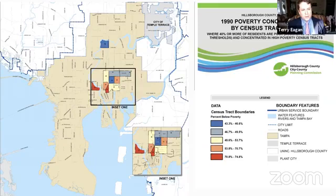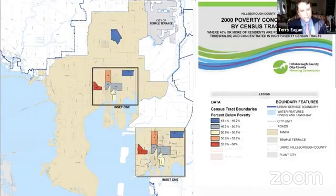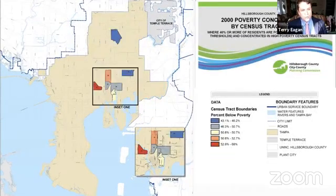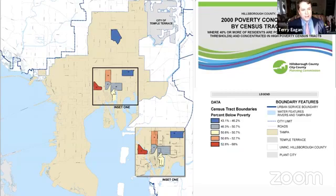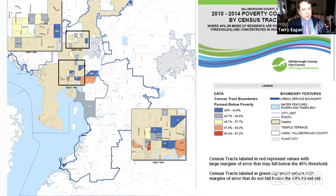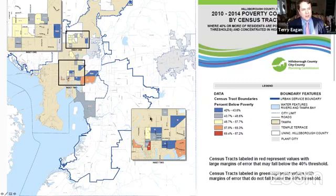Then we hit the lowest concentration of poverty in the year 2000, where we had a big economic boom and a lot of the tracks had dropped out — we're not seeing as much concentrated poverty. Getting into 2010, we see the trend that was being discussed. Part of this can be explained because we were coming out of the great recession. You see downtown expanding east. The university area popped up for the first time.